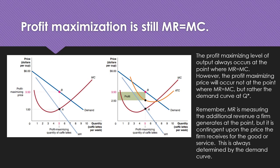The key things to know: marginal revenue equals marginal cost determines the profit-maximizing level of output. Unlike perfect competition, we go up to the demand curve to determine price. To determine whether the firm is making money, compare price to average total cost at the profit-maximizing output. If price is higher than ATC, the firm earns positive profit. If they're equal, the firm breaks even. If price is below ATC, the firm is losing money.